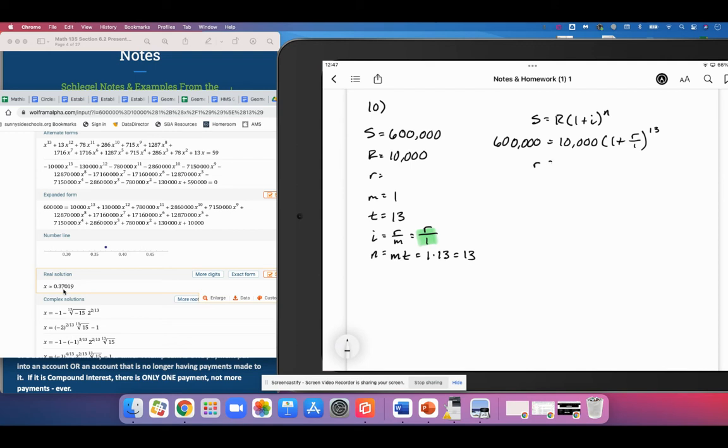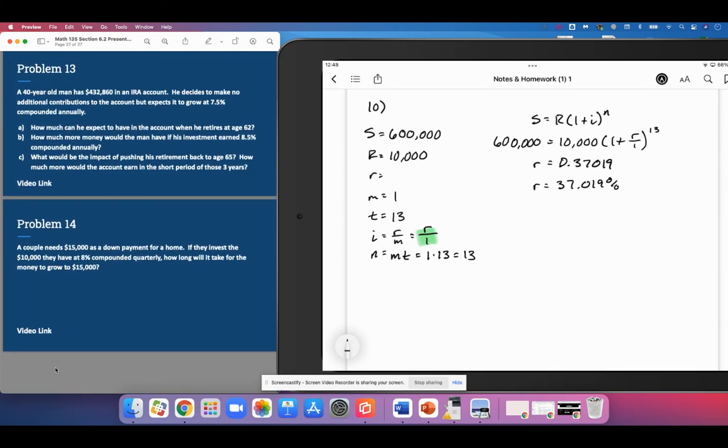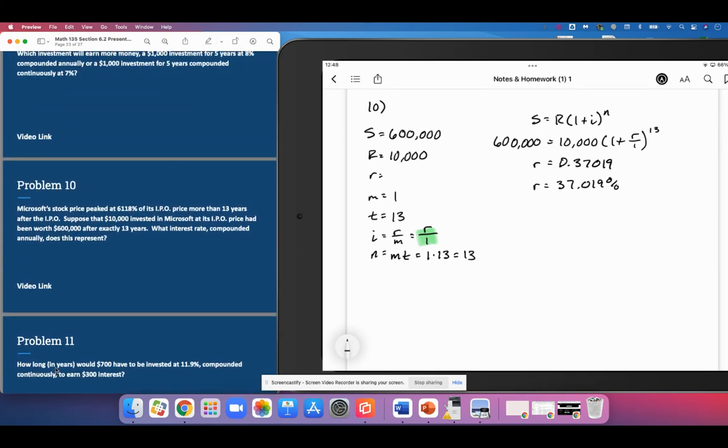So lowercase r is our interest rate. And so 0.37019 is what this ends up being. And that is equivalent to 37.019% interest. That is ridiculously great, incredible growth everyone. And so we can say that, what was this question asking us again? The interest rate for this investment was 37.019%. That's crazy.